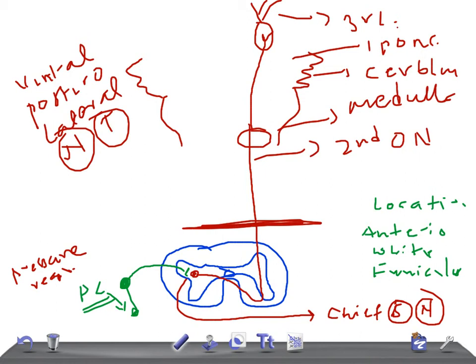This is because the fibers of this tract cross to the opposite side in the spinal cord, just as we discussed for the lateral spinothalamic tract. With a unilateral lesion, no sensation will be carried to the opposite side below the level of the lesion.